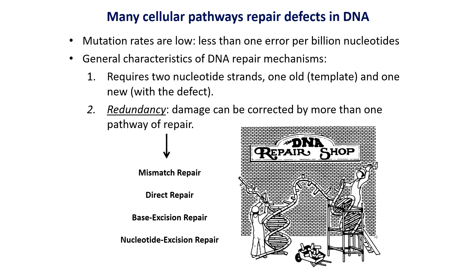These types of mutations can be classified in different ways, and we'll talk about the specific types in video 7-2. But if a mutation does occur, how can we repair it? Mutation rates are low — about less than one error per billion nucleotides — because we have many cellular pathways that repair defects in DNA before they have a chance to become permanent. DNA repair mechanisms require two nucleotide strands — one old template strand and one that contains the mutation — so the old template strand can be used to repair the other strand by first removing the defect and then using the old template strand to replicate and complement the new strand.